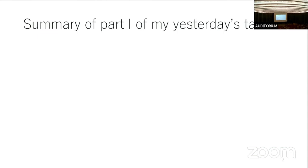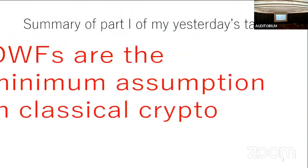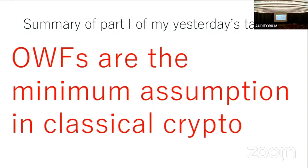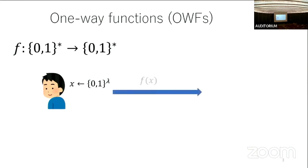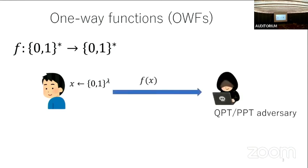If you attended my yesterday's talk, the summary of the first part was this one. One-way function is the minimum assumption in classical cryptography. A one-way function is an efficiently computable function, and security is defined as follows: the challenger chooses a random bit string x and sends f(x) to the adversary. If you require quantum security, this adversary is quantum polynomial time.